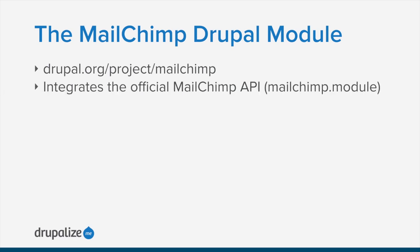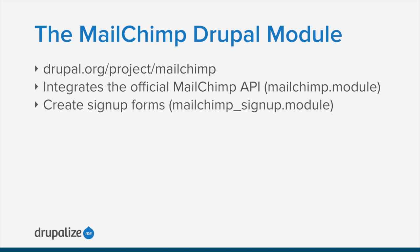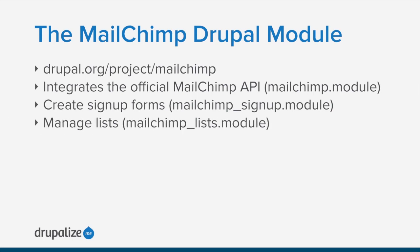The module itself consists of the main MailChimp module, which provides integration with the MailChimp API and some basic configuration like storing API keys, and a handful of submodules. The MailChimp signup module allows you to create anonymous signup forms for your MailChimp lists and display them as blocks or standalone pages within Drupal. The MailChimp lists module allows you to subscribe any entity with an email address to MailChimp lists by creating a MailChimp list field, allowing anyone who can edit that entity type to subscribe, unsubscribe, and update member information directly from within Drupal.